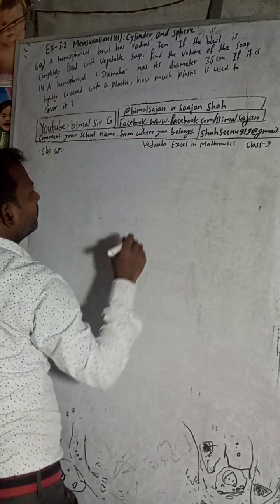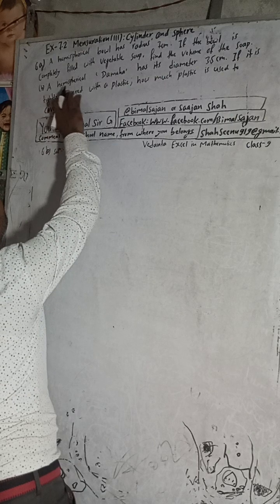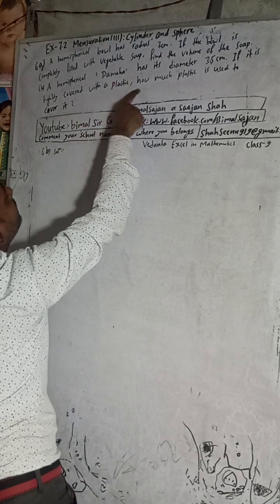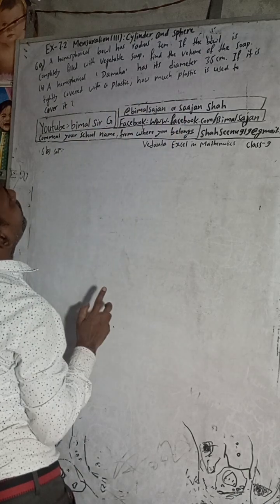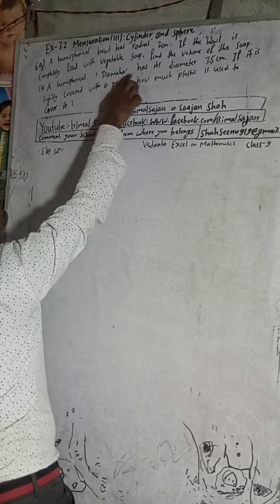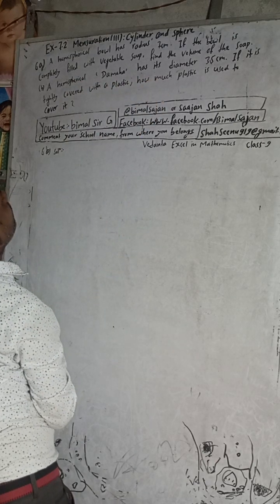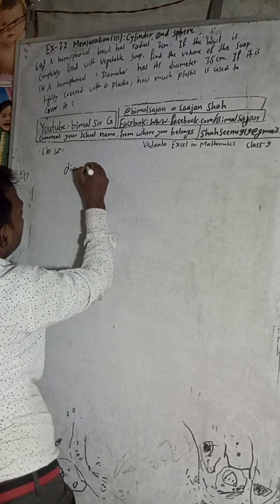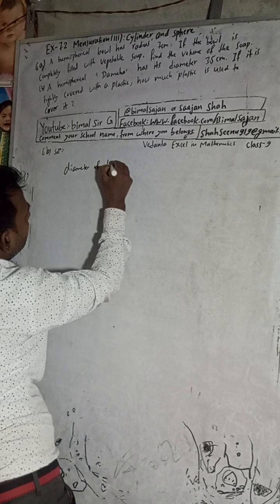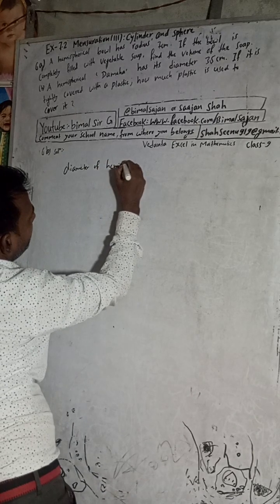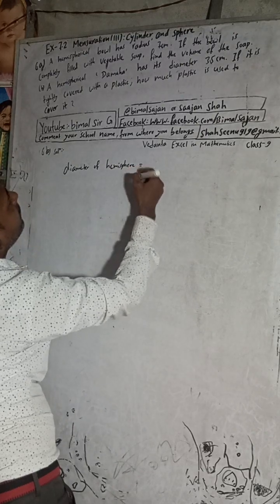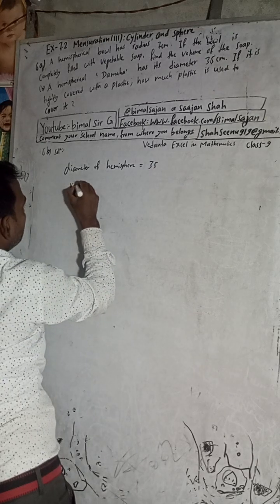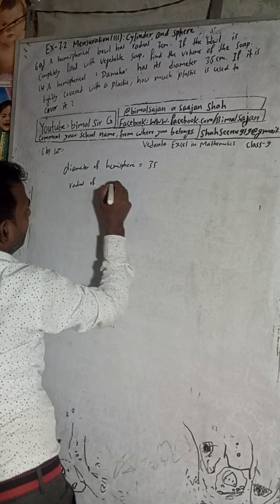6a is already solved. Now here: a hemispherical dome has its diameter 35 cm. If it is tightly covered with a plastic, how much plastic is used to cover it? Given: a hemispherical dome. The diameter of the hemisphere is given as 35 cm.